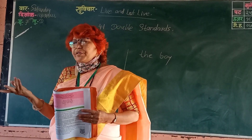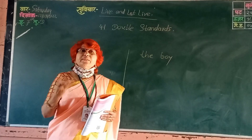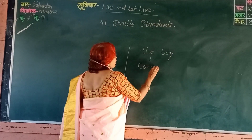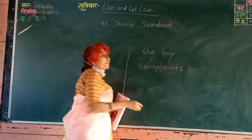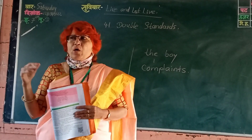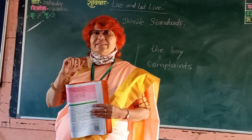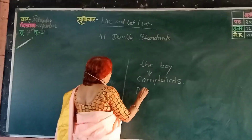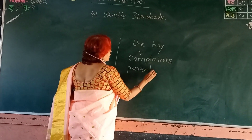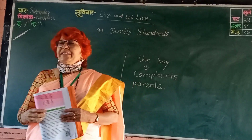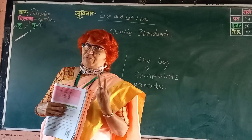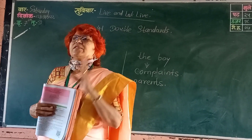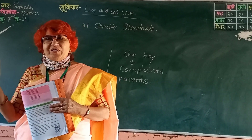What is the boy speaking about? The boy is complaining. He is telling us different kinds of complaints. Whom is the boy complaining against? With his parents. Very good. The boy is complaining about his parents. His parents behave with double standards — they have different policies for their kids and different policies for themselves.